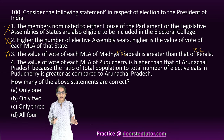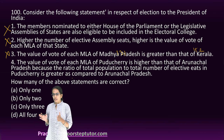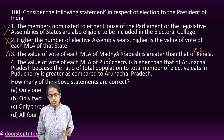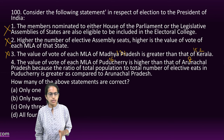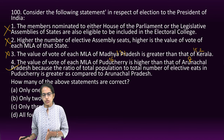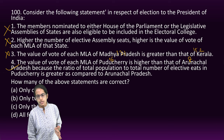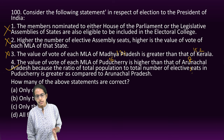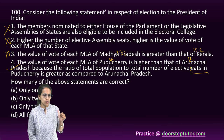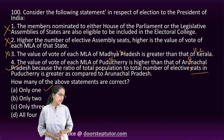The value of the vote for the MLA of Puducherry is higher than Arunachal Pradesh — that is correct. For Puducherry it is 16 and for Arunachal Pradesh it is 8. This is because the total population to the number of elective seats in Puducherry is greater compared to Arunachal Pradesh. So only statement 3 is the correct option.